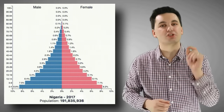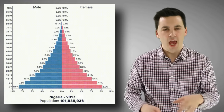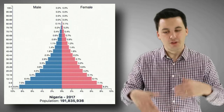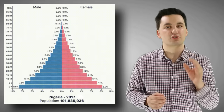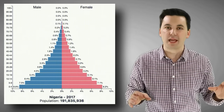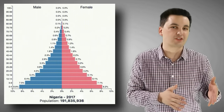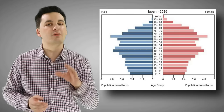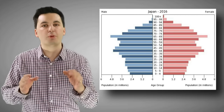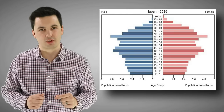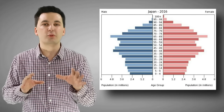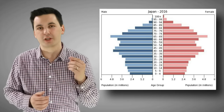Definitely make sure you review population pyramids and look at countries in different stages of the demographic transition model — this will help you interpret these charts. If we have a really large base, we're probably in an early stage of the demographic transition model. If we're looking at a pyramid that's more top-heavy, we're probably in a later stage, and we might be having issues with our dependency ratio, putting more burden on the working class.